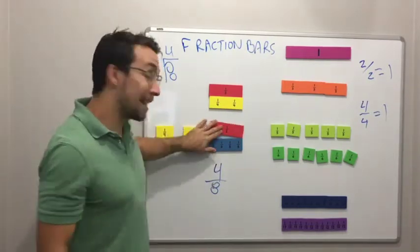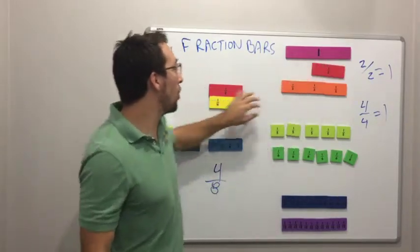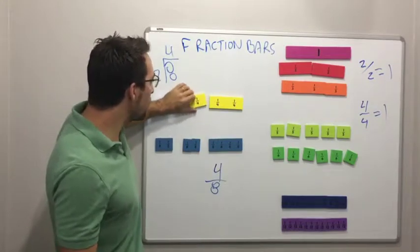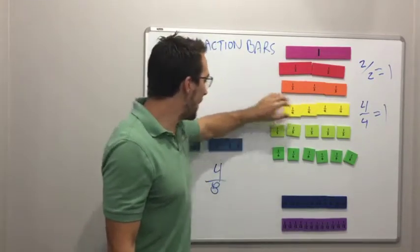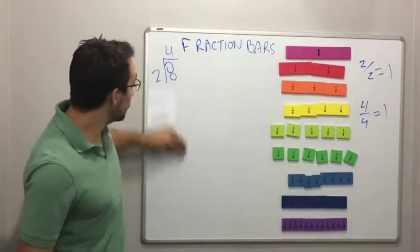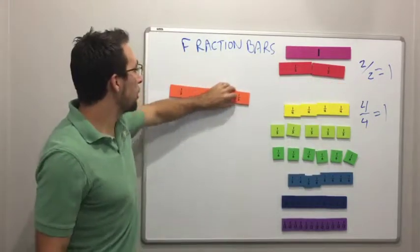Fraction bars are cool because it allows you to visualize how fractions compare to one another. So that's just dealing with eighths and fourths and halves. What about if we look at sixths, sixths and thirds?